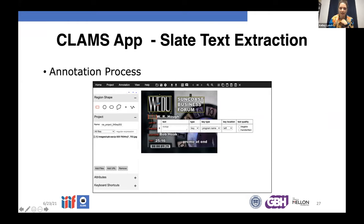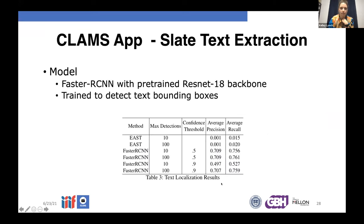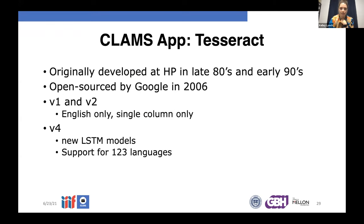The next tool is slate text extraction, which is another model we trained for detecting the actual location of text within a frame. For those frames with text, we annotated them by drawing boxes and transcribing the text, using the VIA annotation environment. Tesseract is the final tool in the pipeline — it's an OCR engine that takes an image as input and outputs information about where in the image there's text and a transcription of that text.